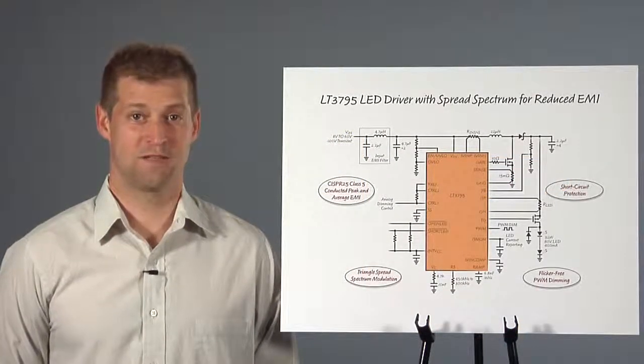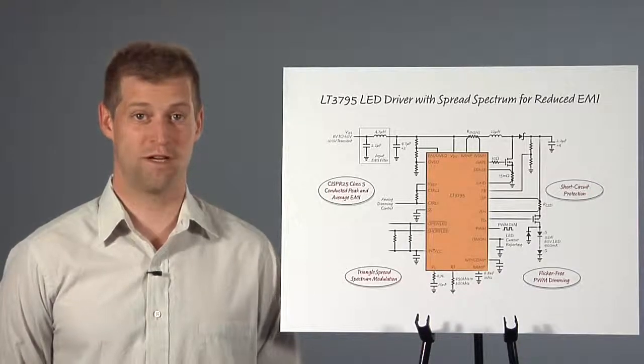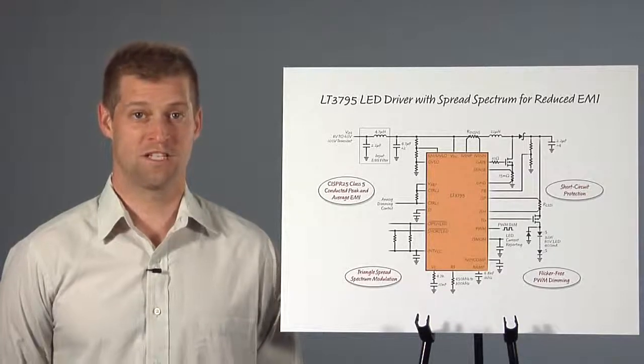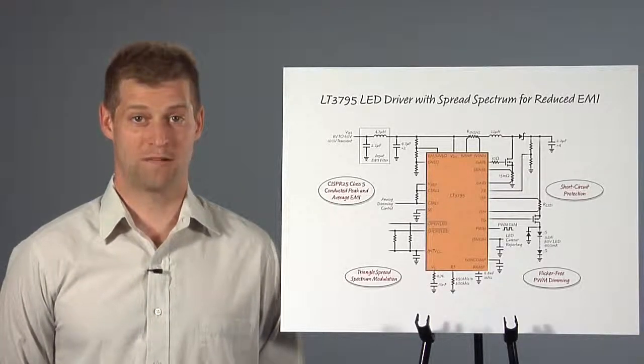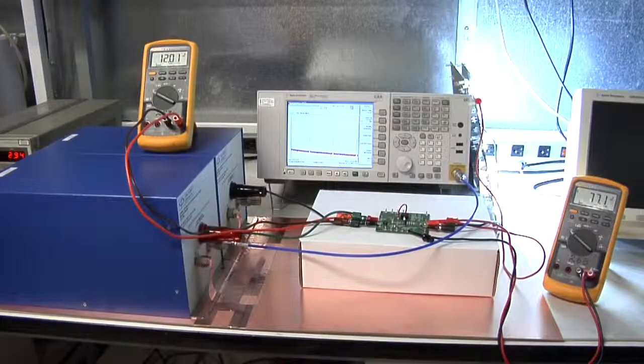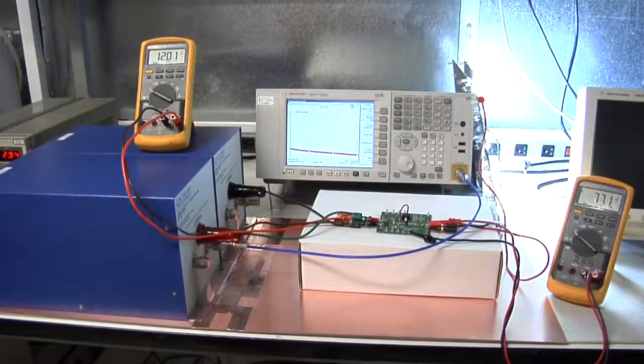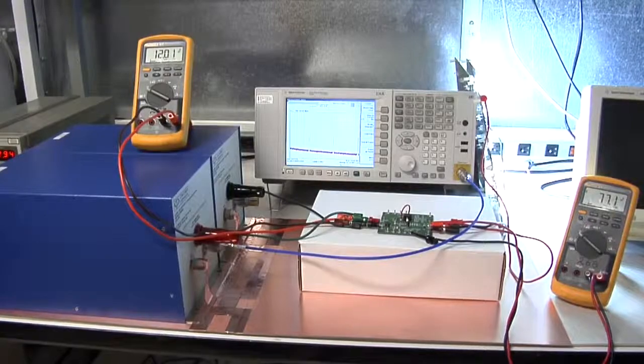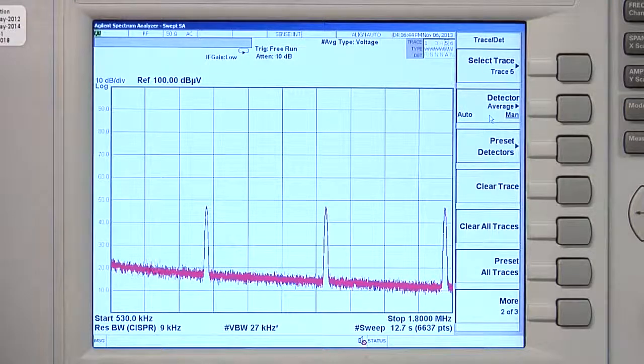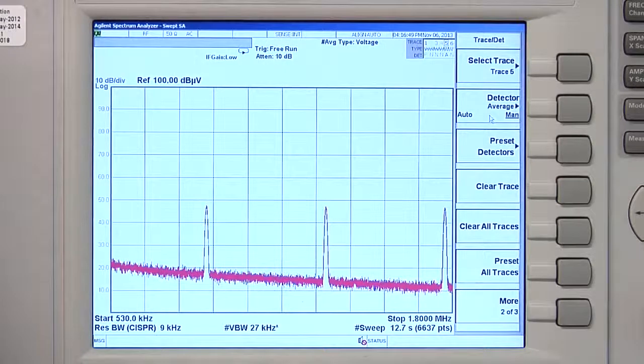Automotive electronics must pass stringent EMI requirements to avoid interference with radio and communication signals. CISPR-25 is a commonly used spec. Capturing the conducted EMI is done in a controlled environment with a spectrum analyzer and a CISPR-25 line impedance stabilization network. Class 5 conducted average EMI is limited to 34 dB microvolts in the AM band, between 530 kHz and 1.8 MHz. Class 5 is the hardest to pass.